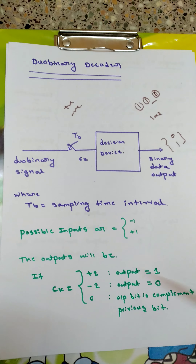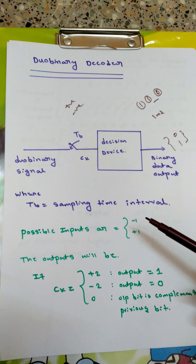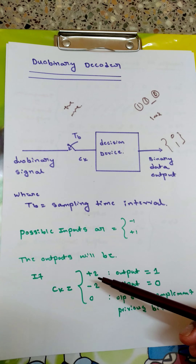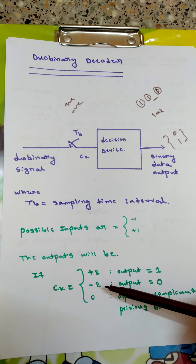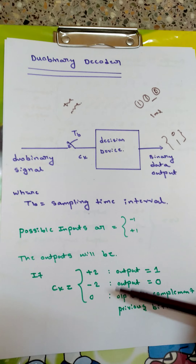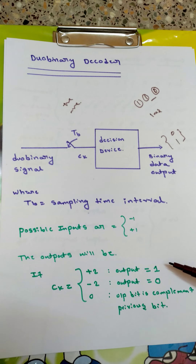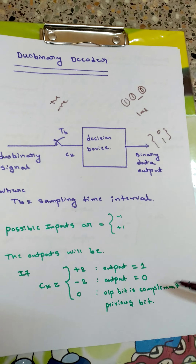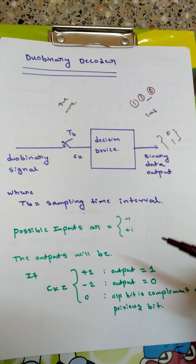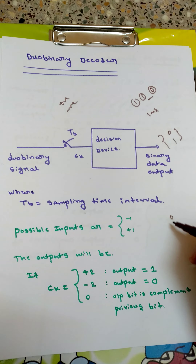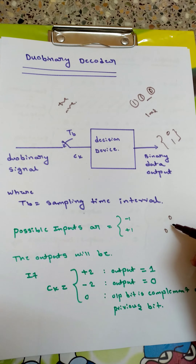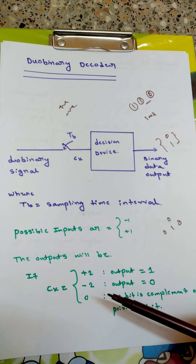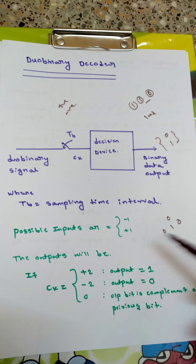Regarding the decision device and decoding circuit: possible inputs are minus one and plus one. ck can have three values as discussed in the previous video: plus two, minus two, and zero. When ck is plus two, output is plus one. When ck is minus two, output is zero. When ck is zero, the output bit is the complement of the previous bit. This concept will be explained on the next page.